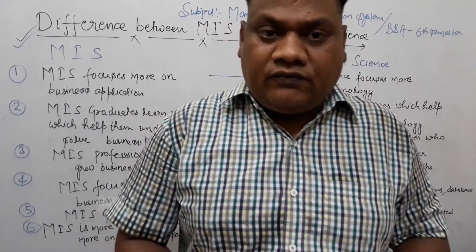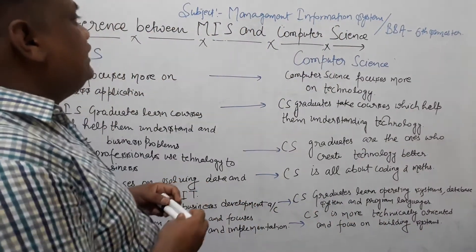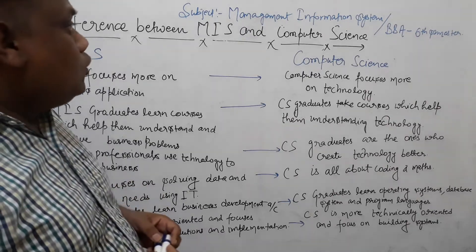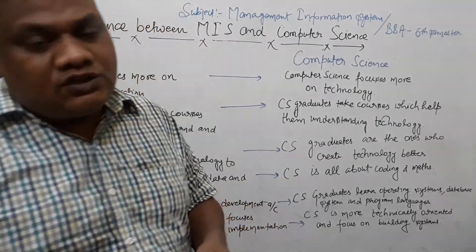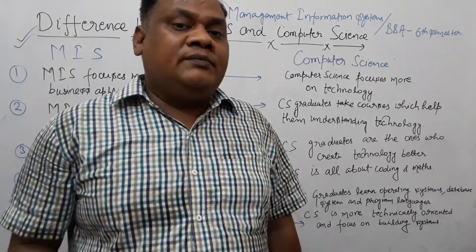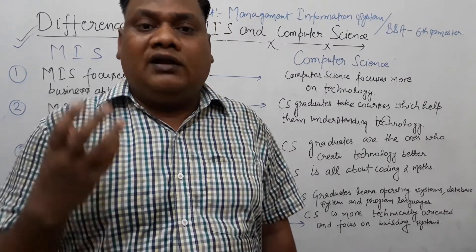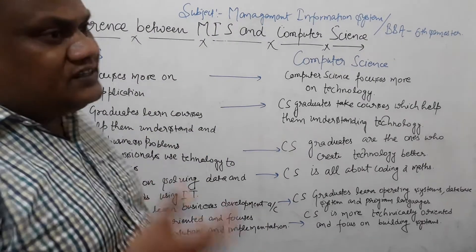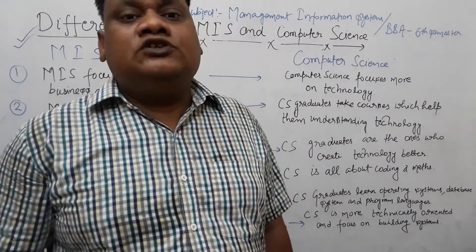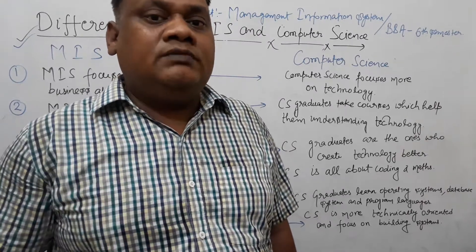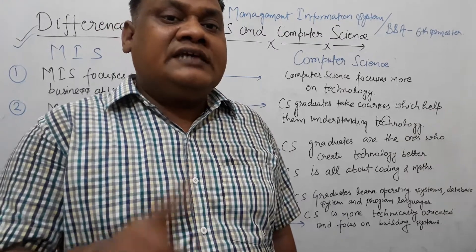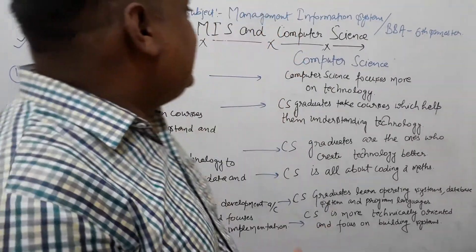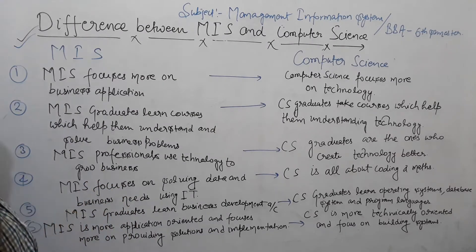Hello students, I hope all of you are very fine. Today our subject is Management Information System for BBA 6th semester, and today our most important topic is the difference between MIS and Computer Science. We have already covered functions of Management Information Systems on YouTube, and in this sequence today we also have the difference between MIS and DSS.